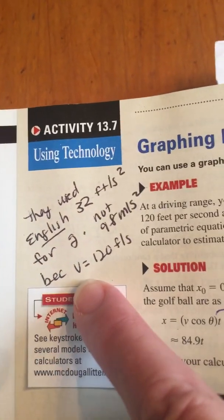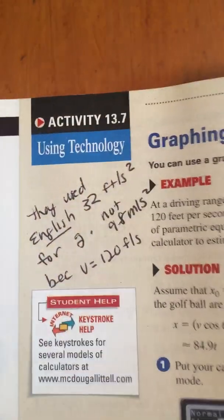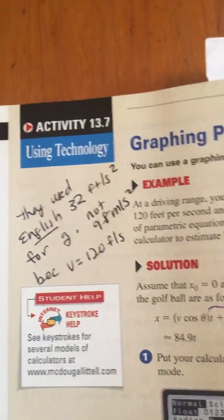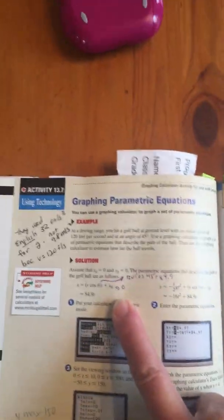I was confused at first. I'm so used to teaching science that it confused me that they used 32 feet per second squared for gravity, not 9.8 meters per second squared, because their velocity is at 120 feet per second. I was so confused because I'm so not used to using English units.